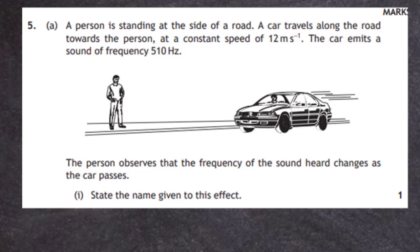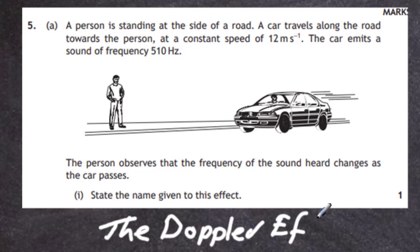For one mark you are asked to state the name of the effect. When we state the name of the effect we just name it, don't explain it. It is of course the famous Doppler effect. Make sure we have it spelled correctly. The Doppler effect. That's your one mark.